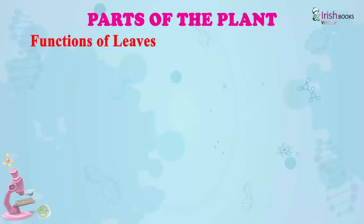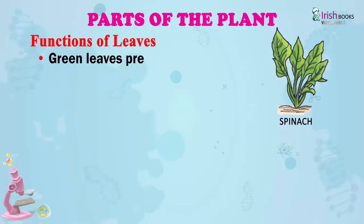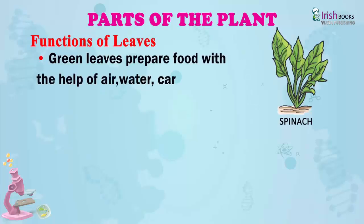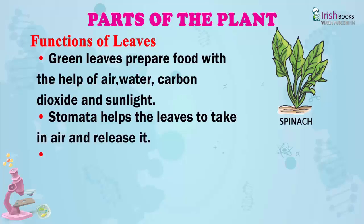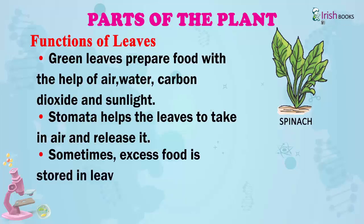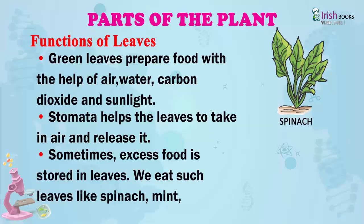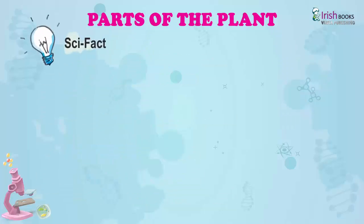Functions of leaves. Green leaves prepare food with the help of air, water, carbon dioxide and sunlight. Stomata help the leaves to take in air and release it. Sometimes excess food is stored in leaves. We eat such leaves like spinach, mint, cabbage. Scientific fact: the stomata throws out extra water from the leaves.